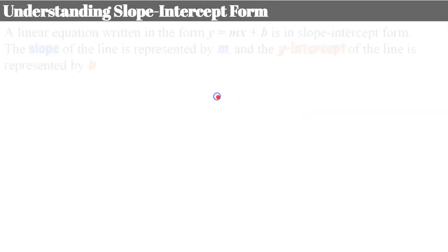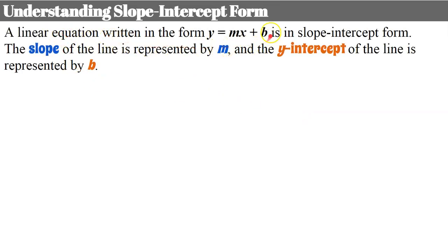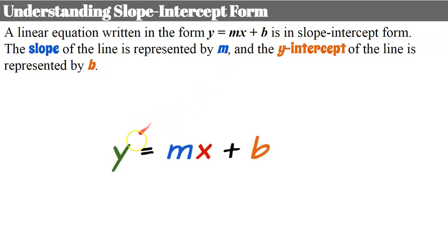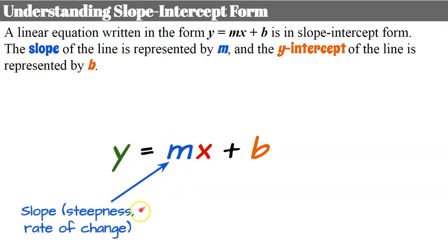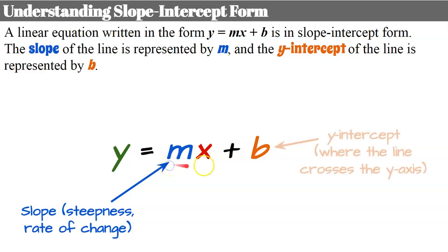Now let's understand slope-intercept form. A linear equation written in the form y equals mx plus b is in slope-intercept form. The slope of the line is represented by m, and the y-intercept is represented by b. Slope represents the steepness or rate of change — it tells us whether the line is positive or negative. The b value tells us the y-intercept, which is positive if we add and negative if we subtract.